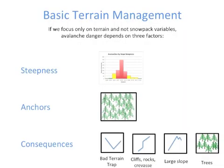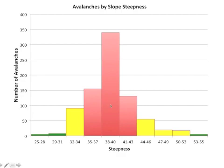For basic terrain management, we have steepness, thick anchors like trees that can help hold the slab in place, and consequences. As far as steepness goes, based on Swiss and Canadian data, from about 35 degrees to about 43 degrees is really the prime avalanche terrain. It drops off both on the steeper side and on the gentler side, giving yellow and green light conditions on both extremes. Extreme riders are actually safer on really steep slopes because they slough off often enough not to build up into slabs. But for most people, reducing risk means going towards gentler terrain.